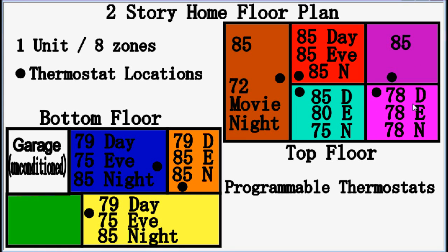This room here is set up for, say, grandma or grandpa staying with you — they're there all day and just want it at one temperature all day long. D stands for day, E stands for evening, N stands for night. They leave during the day so it's set at 85, but grandpa's there during the day so if he needs extra air he'll get it because that zone closes down. 80 degrees in the evening when they come home, and 75 at night because they like it a little cooler when they sleep.